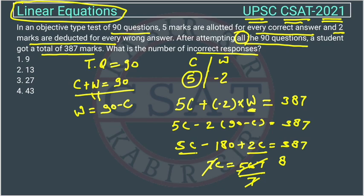7 will divide, and it comes 8 times 7 is 56 and 7 times 1 is 7, so C is equal to 81. If C is 81, W is equal to 9. The number of incorrect responses will be 9, so the answer is option A.